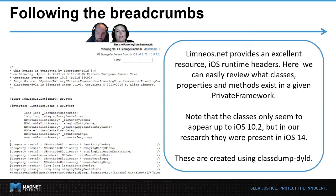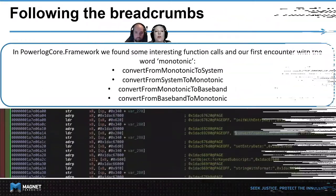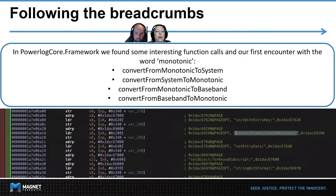Using a Python script called DYLDExtractor, we were able to extract binaries for private frameworks of interest and perform static analysis using Hopper Disassembler. Unlike in our process scan, searching with the word 'power' here seemed quite effective. Limneos.net is an excellent resource for iOS runtime headers — we can easily review what classes, properties, and methods exist in a given private framework. These classes were found up to iOS 14, and we can generate headers ourselves using class-dump-DYLD or review them in Hopper. While looking through Powerlog.framework, this is where we first came across the word 'monotonic.'